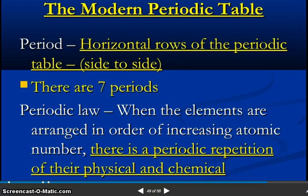So period. What is period? Horizontal rows of the periodic table side to side. There are 7 periods. Periodic law: when the elements are arranged in order of increasing atomic number, there is a periodic repetition of their physical and chemical properties.